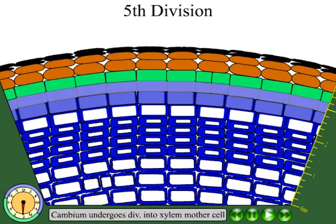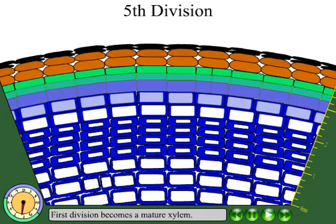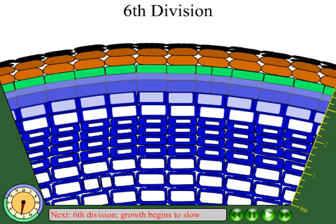In the fifth division, another xylem mother cell forms, while those cells formed in the first division have become fully differentiated.